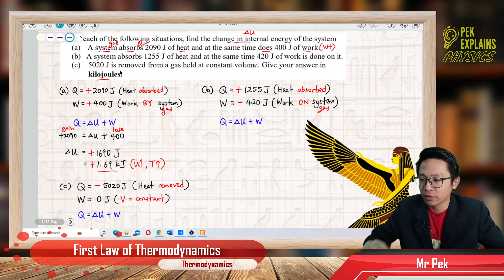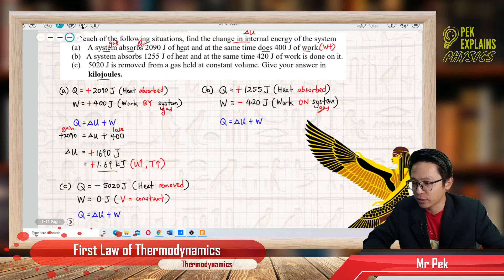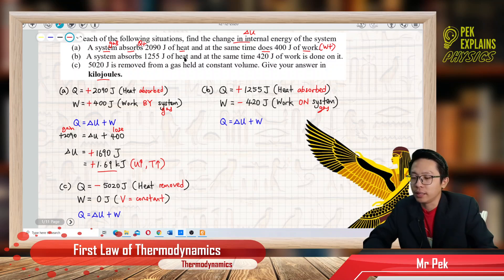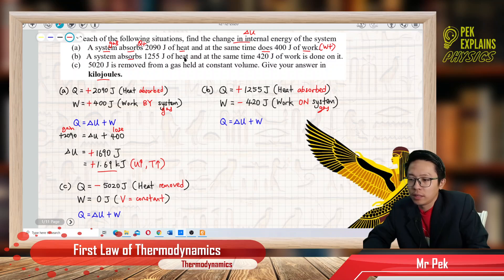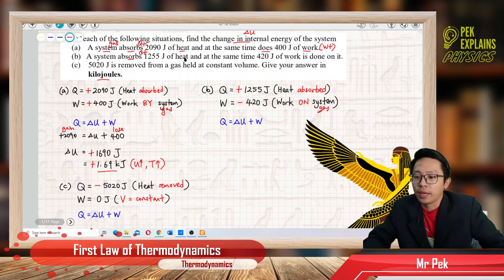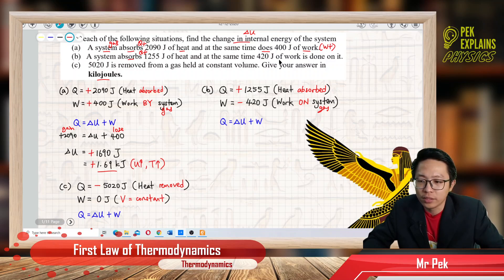Now let us look at the next question, B. A system absorbed — this amount of heat. Again, this is absorbed heat, so it is a positive Q. And then at the same time, 420 joule of work is done on it.